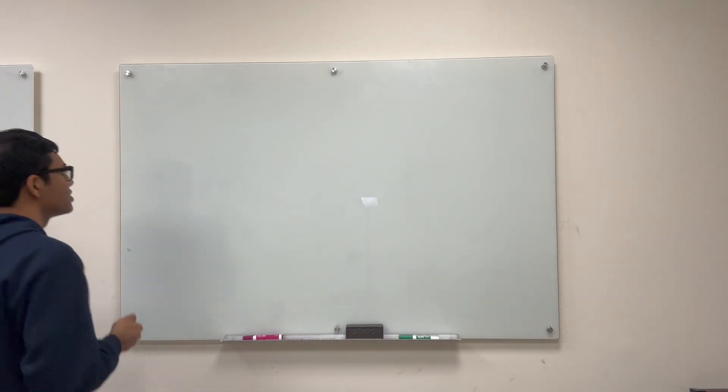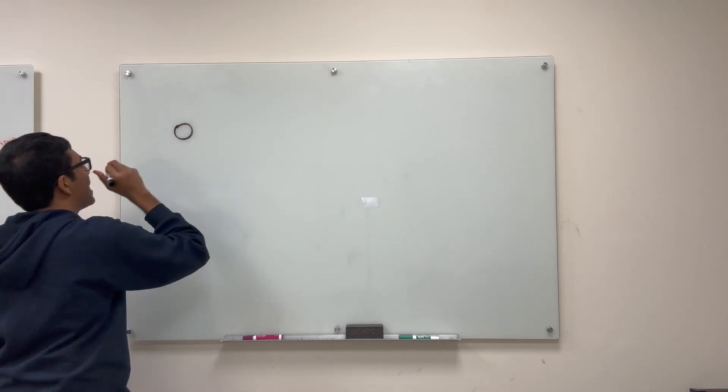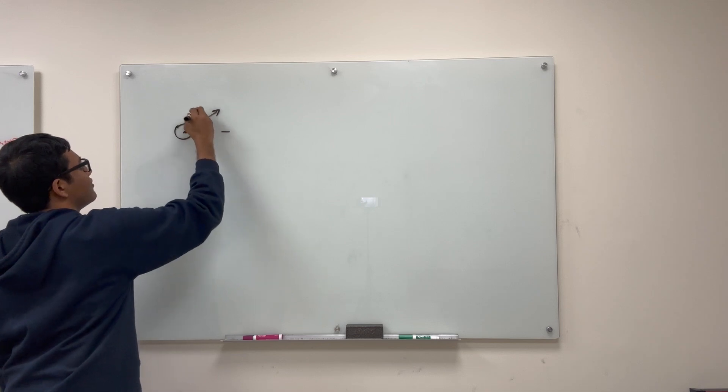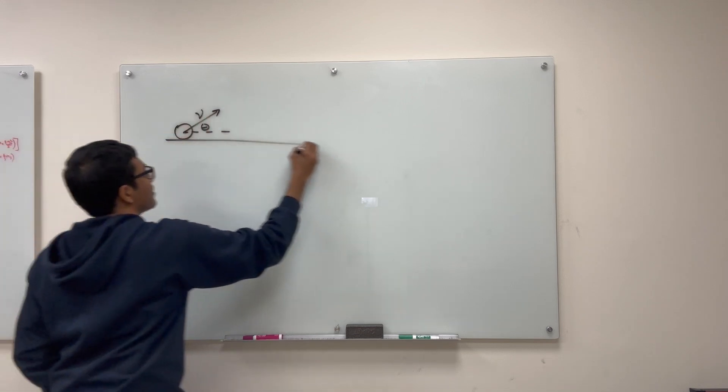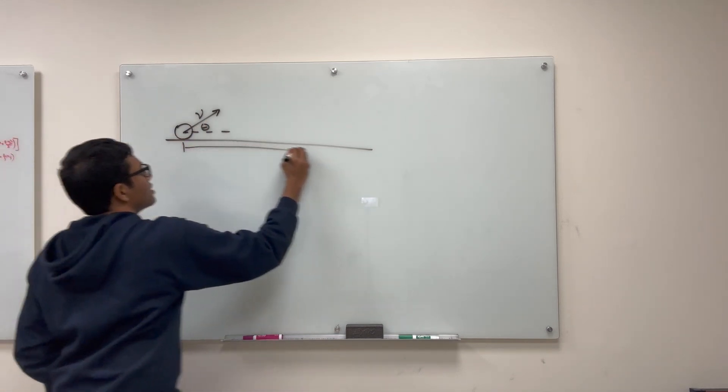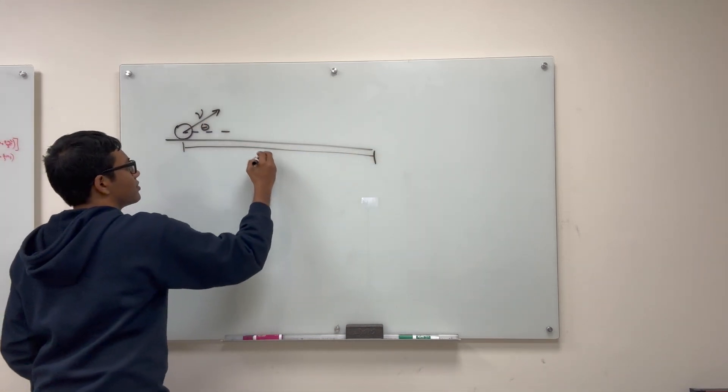So let's go ahead and get started with the problem. Here's the problem. So we have a soccer ball and we kick it at some angle theta with some initial velocity v and we'd like to figure out what angle theta do we have to kick the ball so that it has a horizontal range of d.